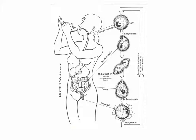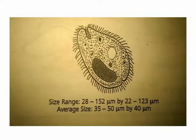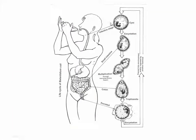We now move to another family: the ciliated class, specifically Balantidium coli, one of the species that can cause human disease. The parasite enters the human host in the cystic stage via contaminated water or food, then undergoes excystation in the small intestine, followed by multiplication in the colon.